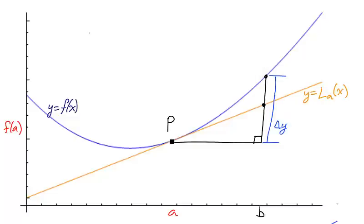We can construct a right triangle with side length delta y, the actual change in the y values between x equals a and x equals b. We can also find the measurement dy, the height defined by the tangent line L_a.